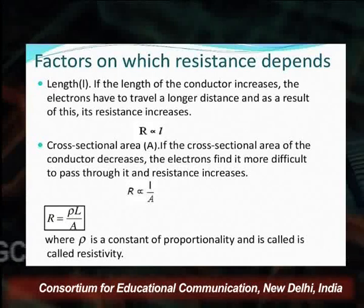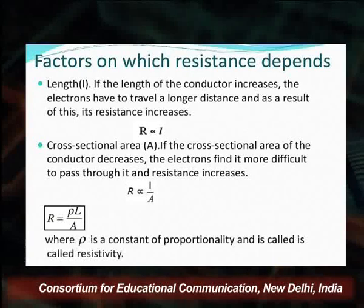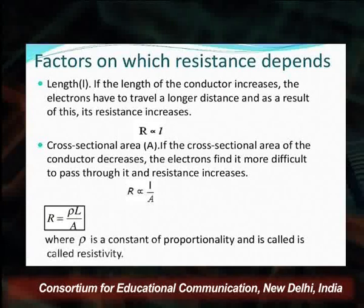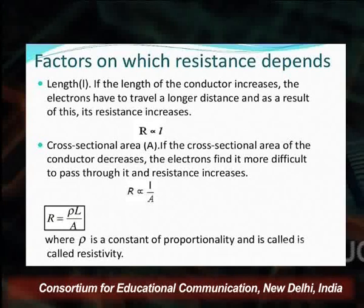Resistance depends upon two factors: length and cross-sectional area. If the length of the conductor increases, electrons have to travel longer distances and resistance increases — R is directly proportional to L. Regarding cross-sectional area, represented by A: if the cross-sectional area decreases, electrons find it more difficult to pass through, and resistance increases. Length increases → resistance increases; cross-sectional area increases → resistance decreases. Therefore R is directly proportional to L/A, written as R = ρL/A, where ρ (rho) is the resistivity, the constant of proportionality.